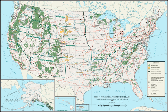The three national grasslands in North Dakota, together with one in northwestern South Dakota, are administered jointly as the Dakota Prairie Grasslands. National grasslands are generally much smaller than national forests.